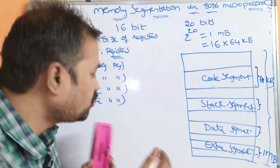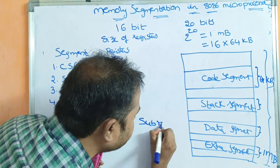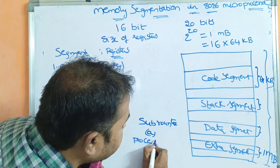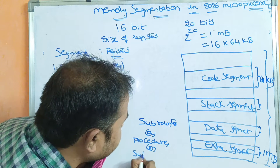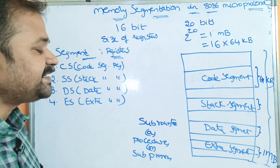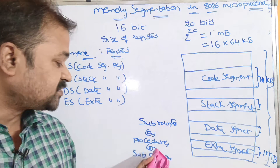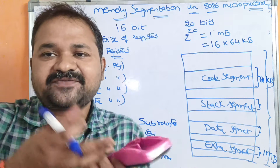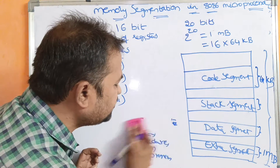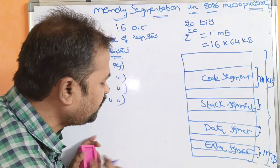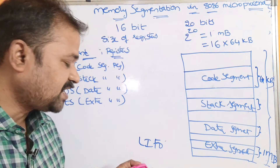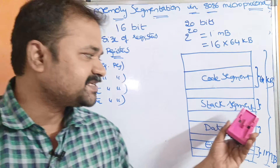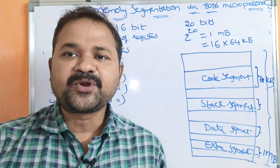The Stack Segment is mainly useful for storing subroutines, which we can also call procedures or subprograms. Subroutines are nothing but functions. Whenever a function is called, its return address will be stored in the Stack Segment. The Stack works on the principle of LIFO — Last In First Out — meaning the element inserted last will be deleted first. This is the advantage of the Stack Segment.